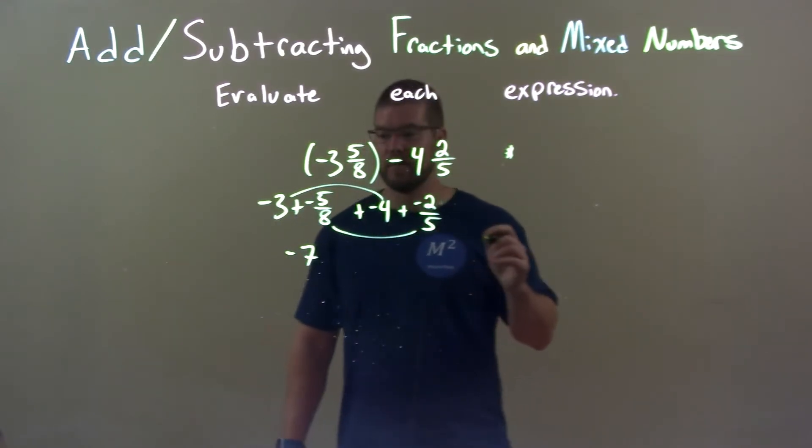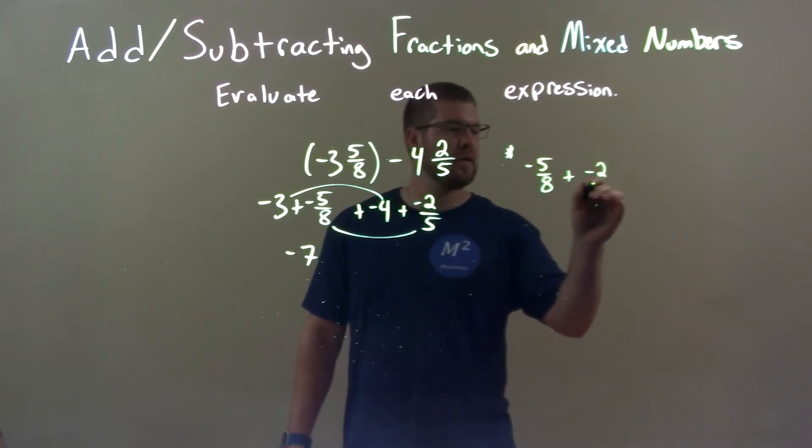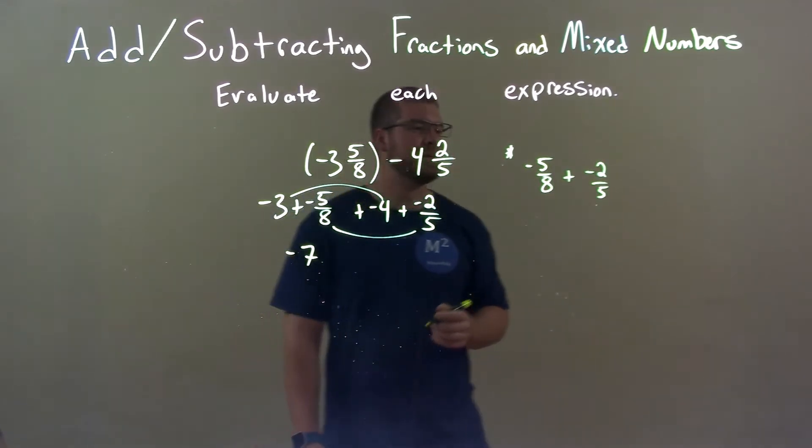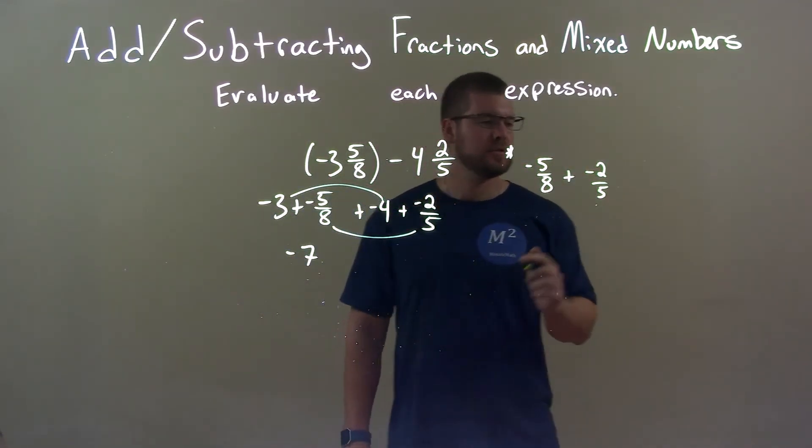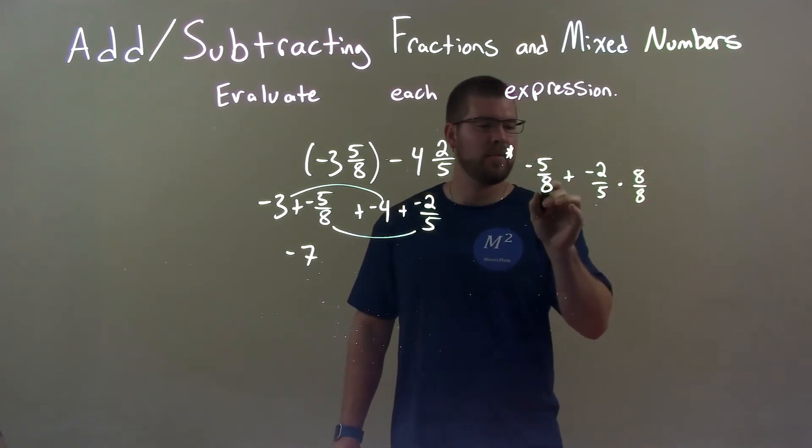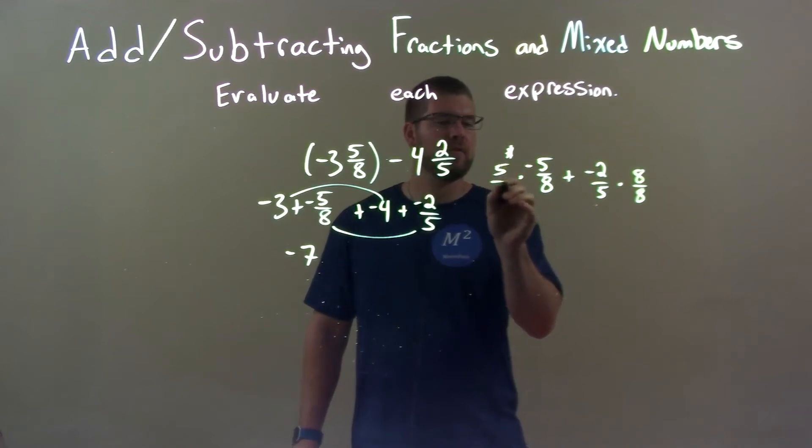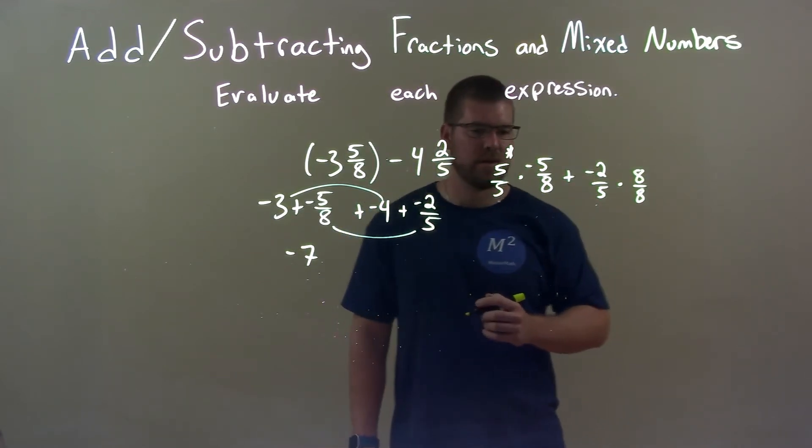All right, so we can't add them directly. Negative 5 eighths plus negative 2 fifths. Well, they have to have the same denominator to add them, so what I'm going to do is multiply the second number by 8 over 8, which comes from this denominator, and the first number by 5 over 5, which comes from this denominator here.